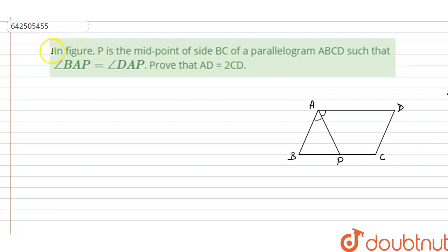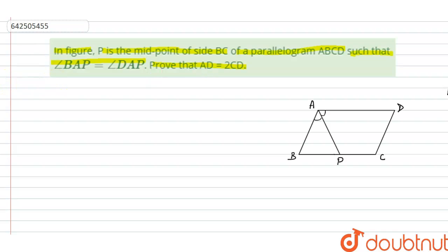Hello everyone, let's start the question. The question says that in the figure, P is the midpoint of side BC of parallelogram ABCD, such that angle BAP is equal to angle DAP. Prove that AD is equal to twice of CD.